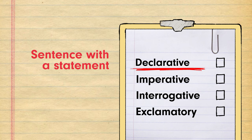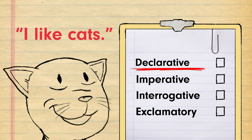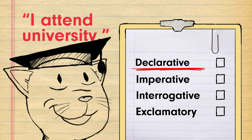A declarative sentence is a sentence with a statement. This could be I like cats or I attend university.